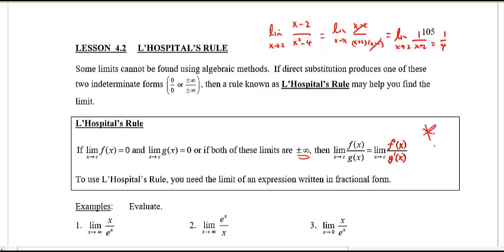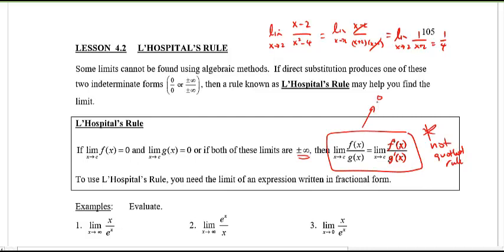Don't get this confused — this is not the quotient rule. Remember we had the lovely song for quotient rule? This is not quotient rule. This only works if the original limit gives you some sort of indeterminate form like 0 over 0, or infinity over infinity.